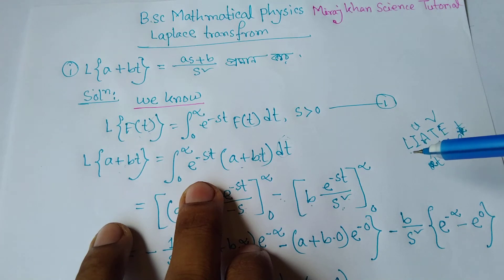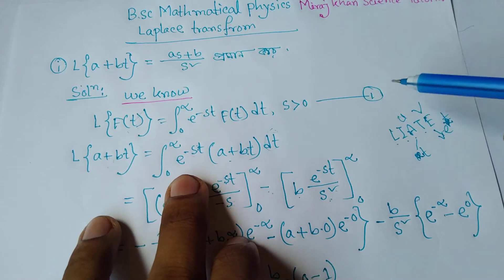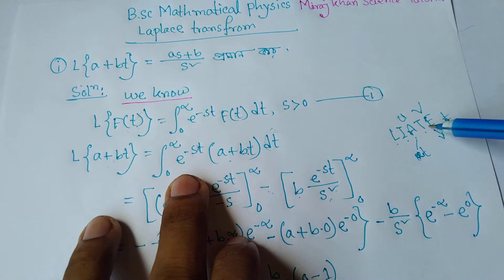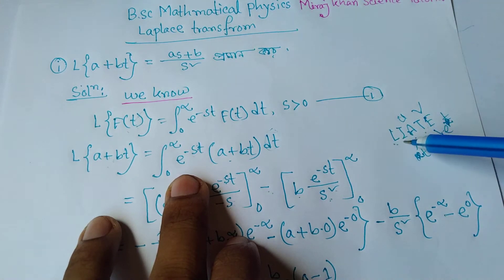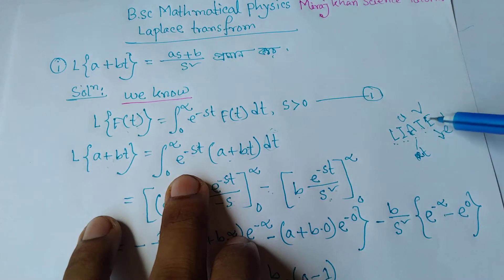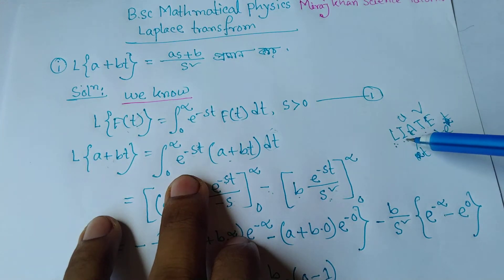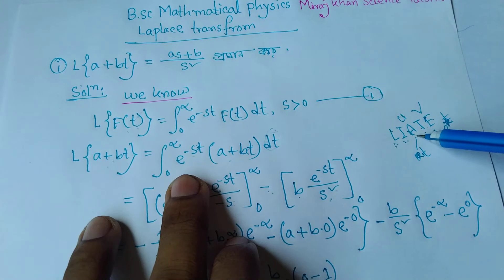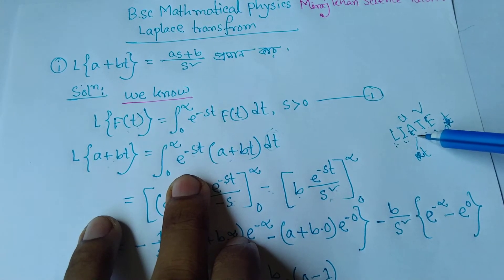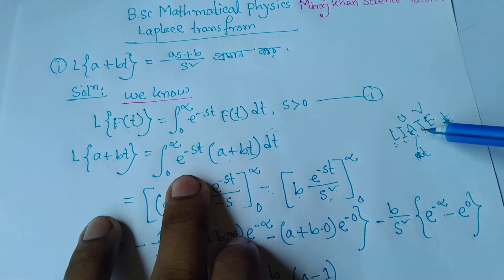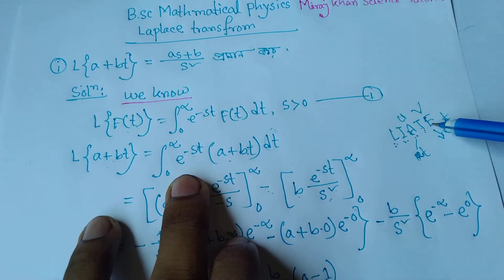If you do a candidate in your question, you already know what it is. The LIATE rule: L stands for Logarithmic, I for Inverse, A for Algebraic, T for Trigonometric, E for Exponential. Logarithmic function includes log; Inverse includes sin inverse, cos inverse; Algebraic includes x, x square, x cube; Trigonometric includes sin x, cos x; Exponential includes e to the power x.